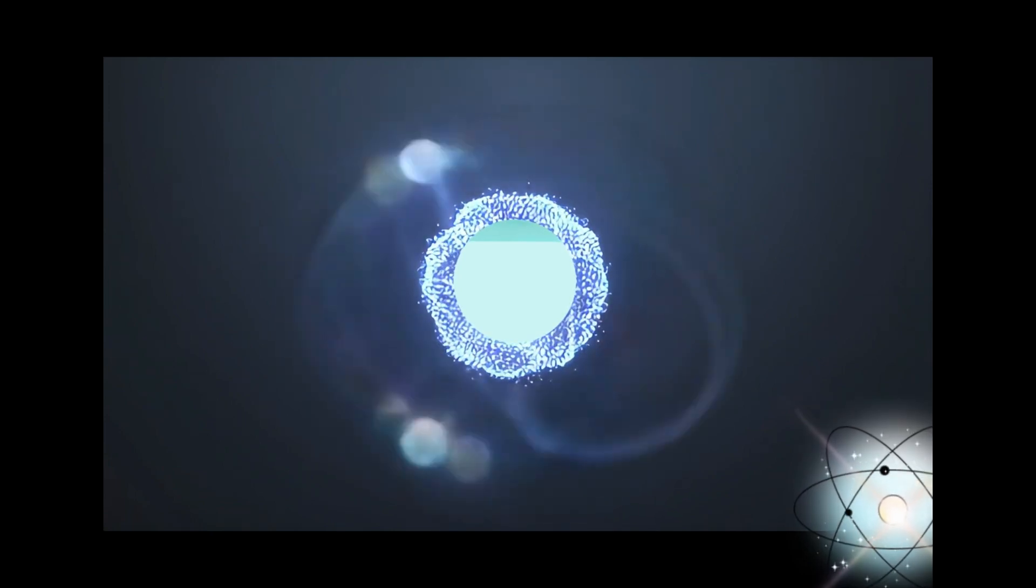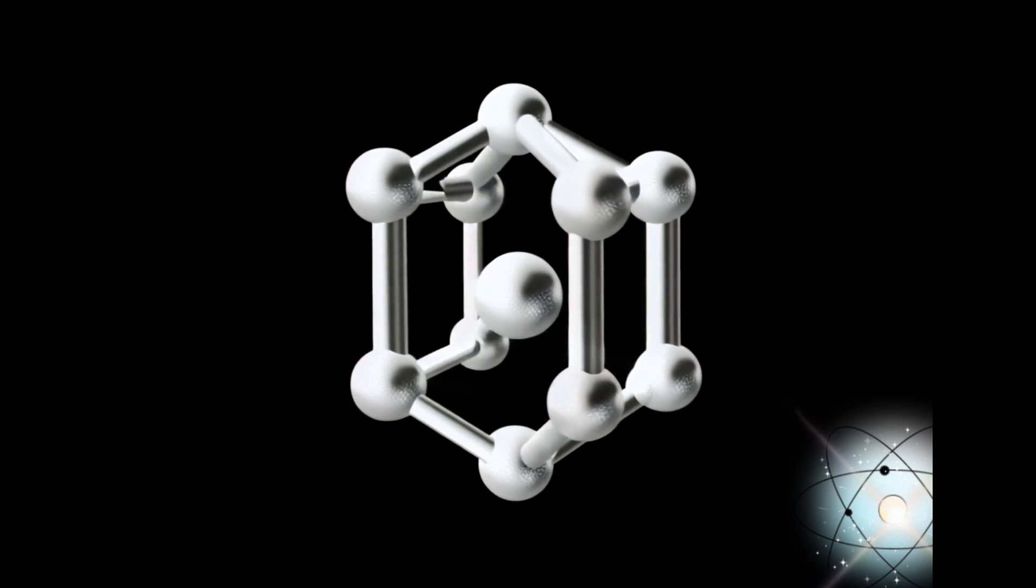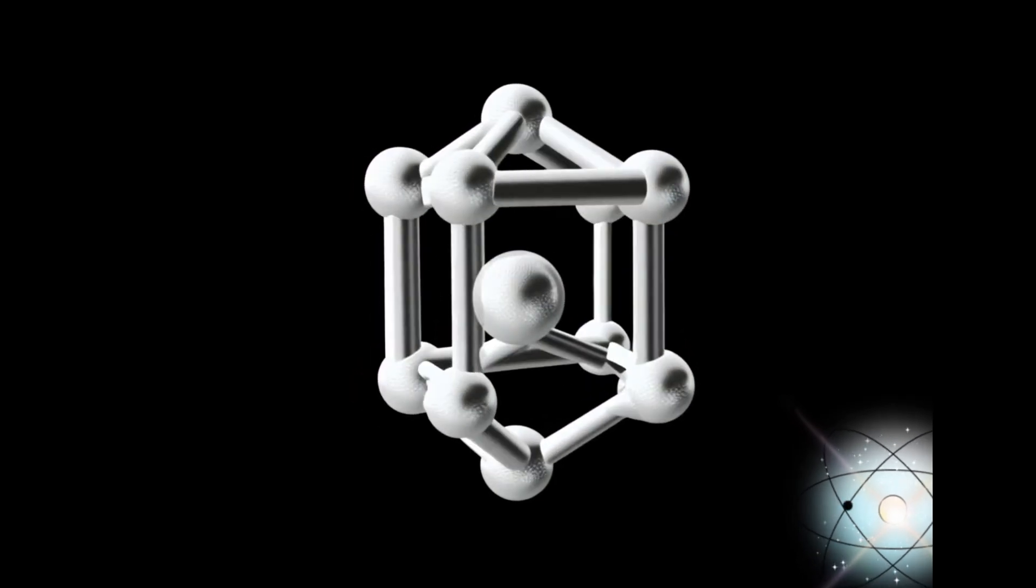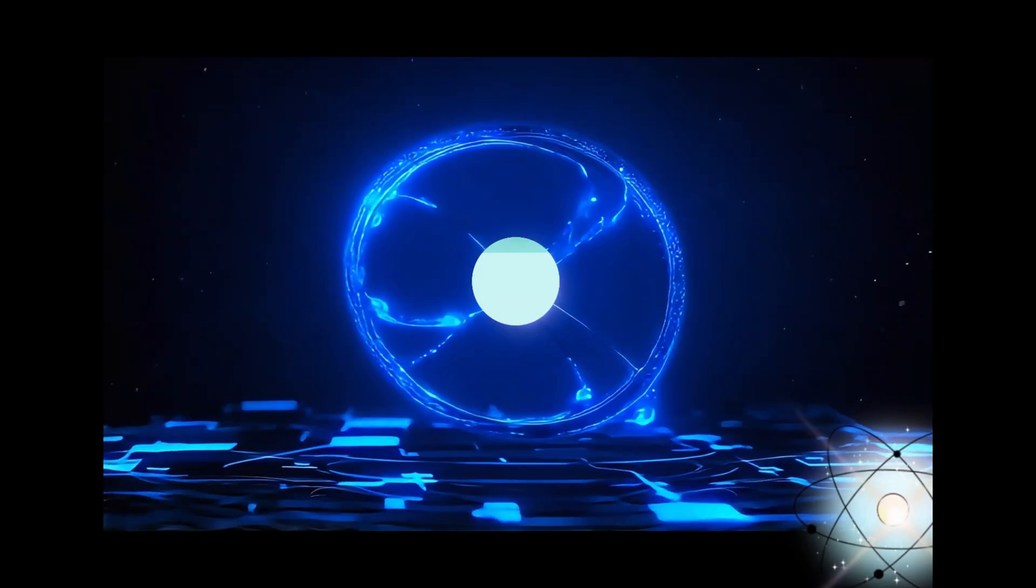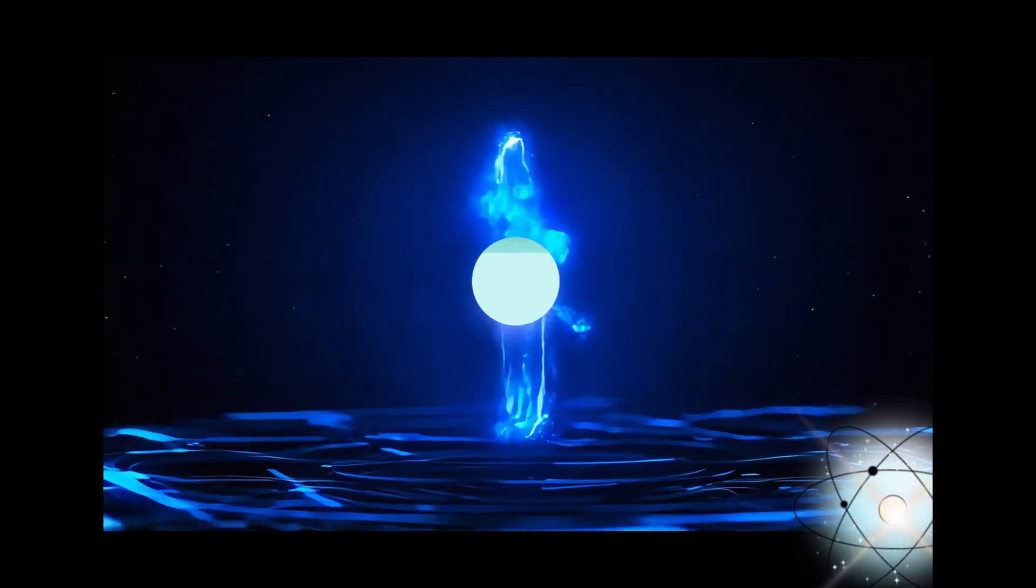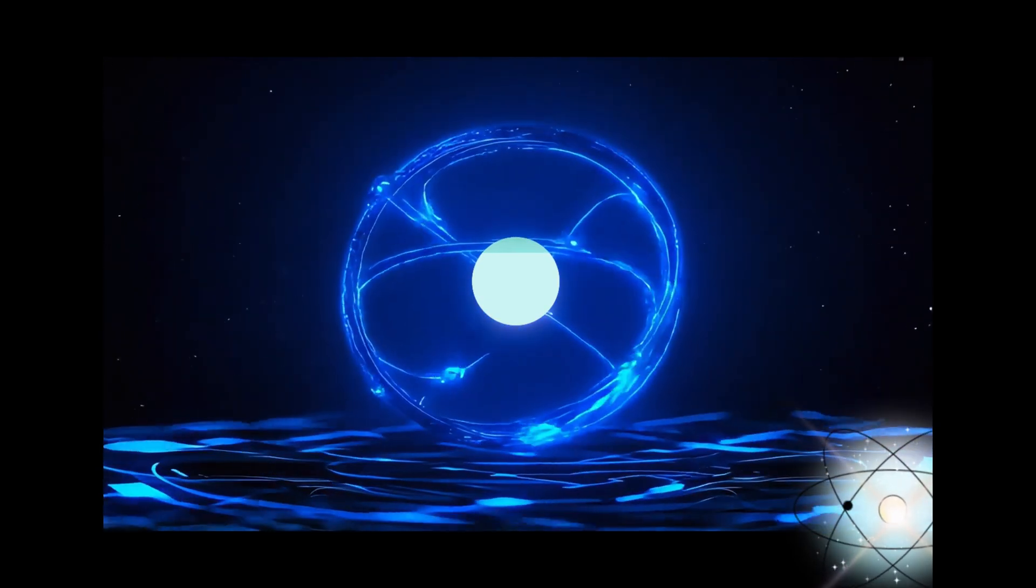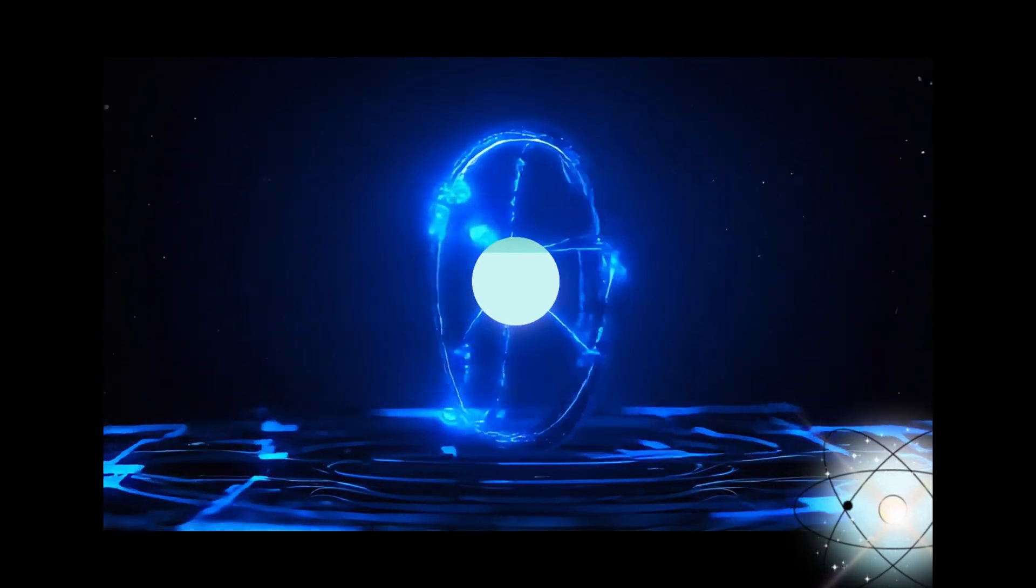The visible grain structures suggest that the high heat input and chemical compatibility between the base metal and the welding material facilitated a seamless fusion, leading to epitaxial grain growth. This process is crucial for achieving structural integrity in the weld joint.